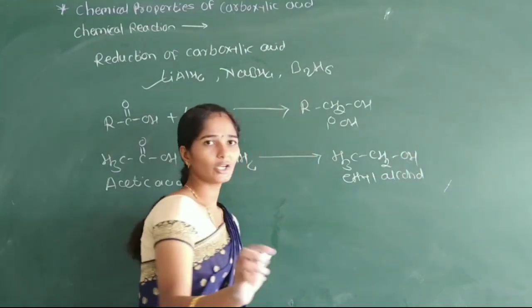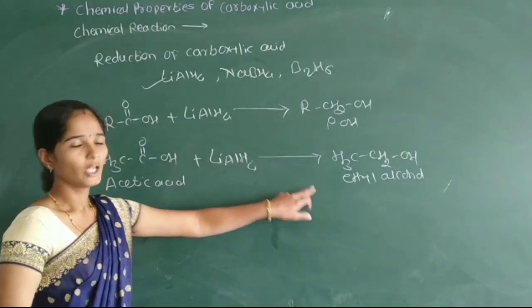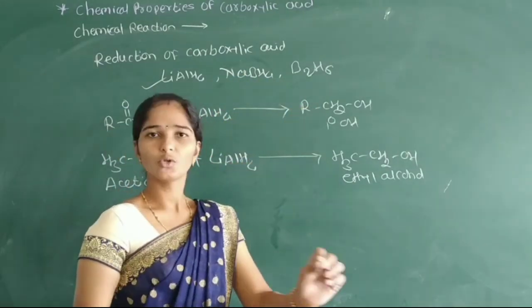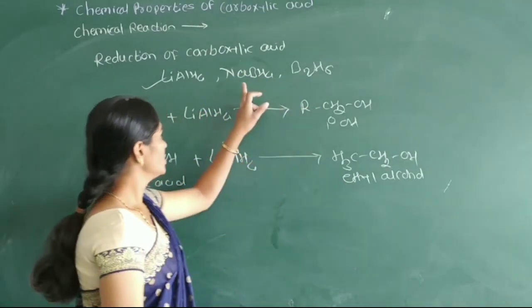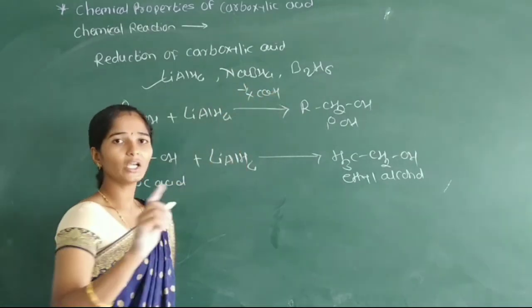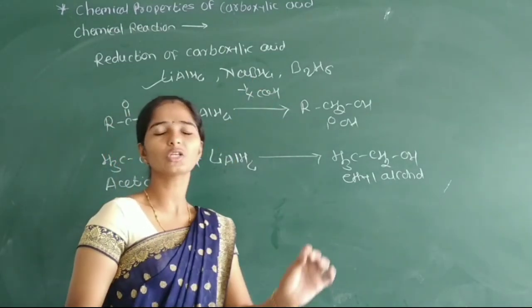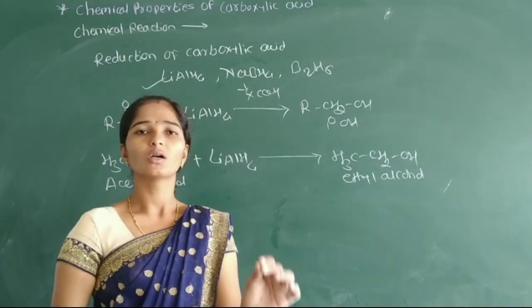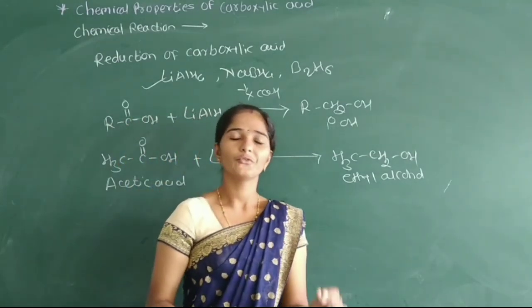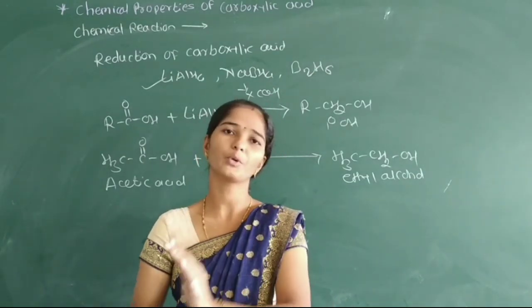This is the reduction reaction of carboxylic acid to form the corresponding primary alcohol. However, sodium borohydride (NaBH4) and diborane cannot reduce carboxylic acid into the corresponding alcohol. Today's lecture covered different chemical reactions of carboxylic acid to form different products.